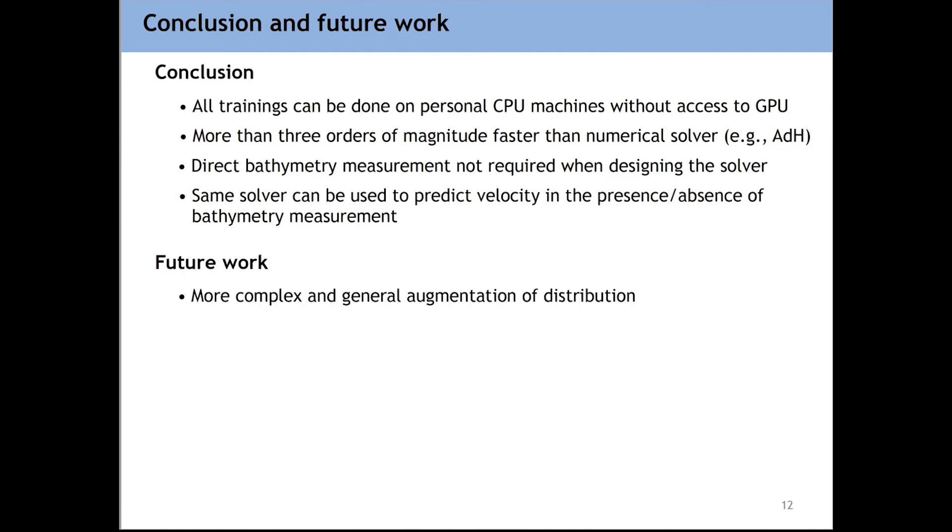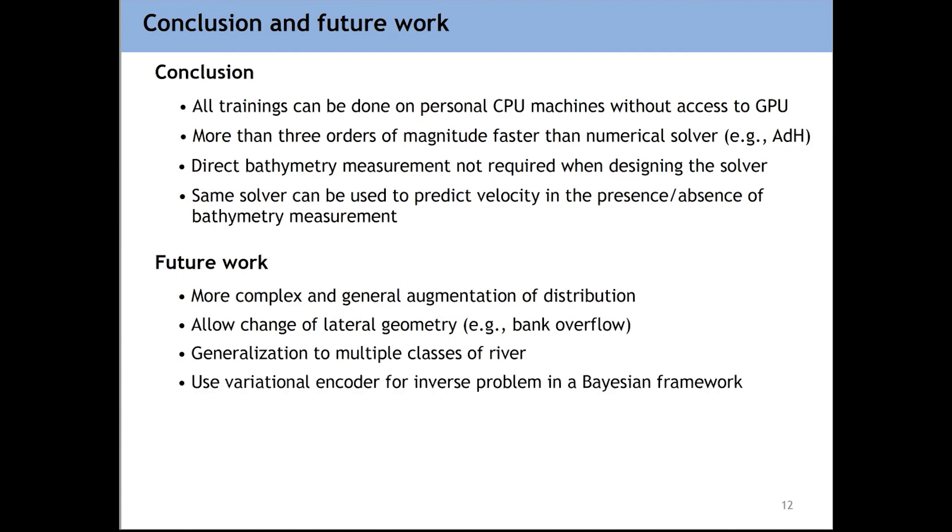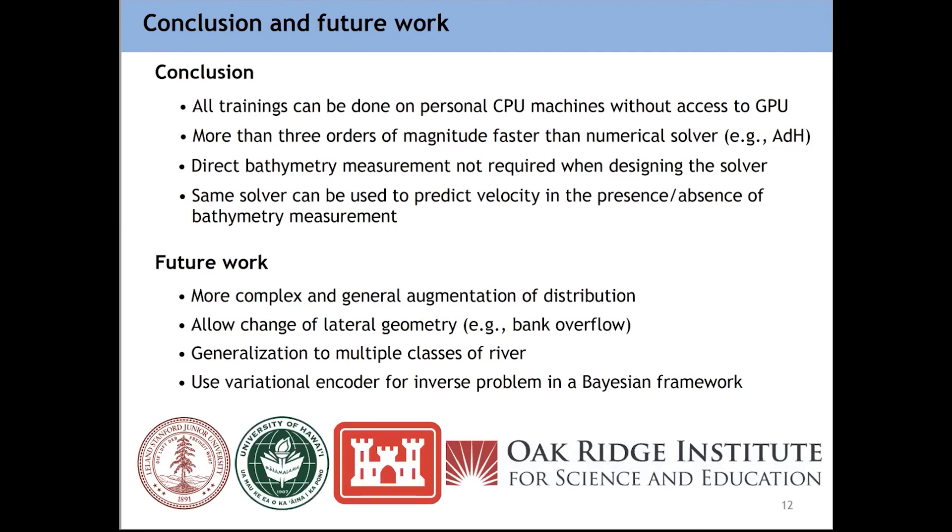And very briefly, our future work. We would like to try more complex and general augmentation of distribution. So here we added some Gaussian kernel. We would like to use something more realistic. Probably we can do something like a GAN, a generative method to have bathymetries that are closer to actual river profiles. We would also like to allow lateral change of geometry, the change of lateral geometry, because the geometry also changes. The lateral geometry changes as the water height changes in the river. We would also like to generalize this solver to multiple classes of rivers, so something that we can train on one river and can be used on another river. And also this is actually not the future work, something that I'm working on right now, which is using the variational autoencoder for the inverse problem in a Bayesian framework. So what I presented today was for the forward problem, but we would like to use the same idea for the inverse problem, starting from velocity, getting information of the bathymetry. As I said, this was a joint work between Stanford University, University of Hawaii, and U.S. Army Engineer Research Center. And the work was also funded by ORISE, Oak Ridge Institute. And I'd like to thank them for supporting the work.